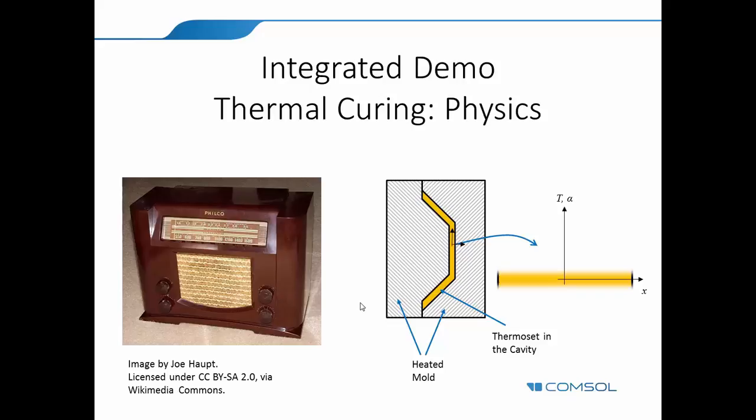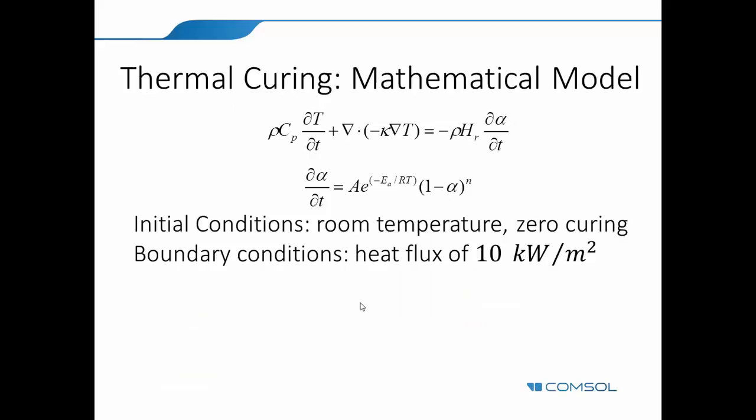In thermal curing what you have is these two equations. The first one is a heat transfer equation where you have a source term coming from the curing process, if alpha is the curing rate. Then in the second one, you have just an equation for the curing rate. This is the Arrhenius equation. A lot of chemical kinetics problems take that form.